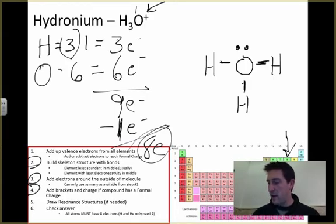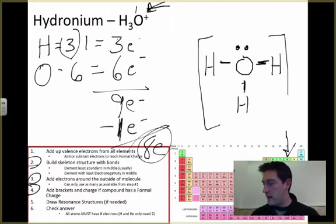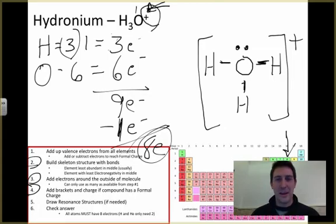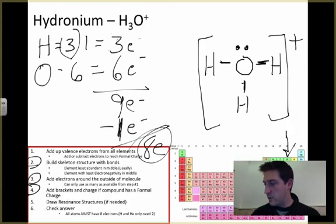I need to add brackets if I have a formal charge, which I do, so I put the brackets and I add a plus. I'm getting that from right up here at the top. Let me clear some of that up so you can see a little more easily.